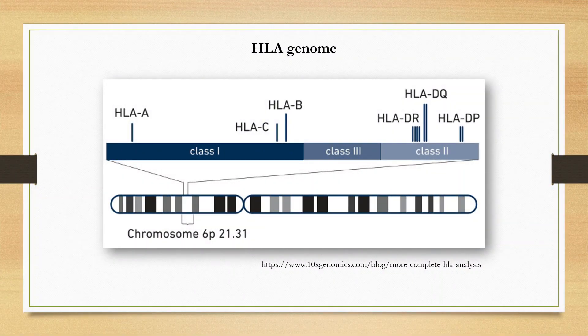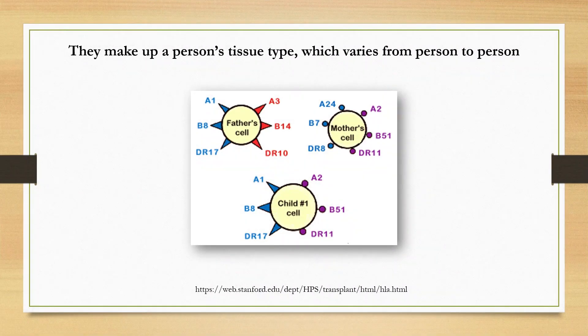The HLA region is located on the short arm of chromosome 6, from 6p21.1 to p21.3. Classic HLA is divided into HLA class I — HLA-A, HLA-B, and HLA-C — and class II — HLA-DR, HLA-DQ, and HLA-DP. HLA makes up a person's tissue type, which varies from person to person. The HLA gene is the most polymorphic in the human genome. Each person has a unique set of alleles, and finding a donor match is a rare event.